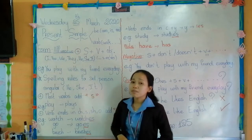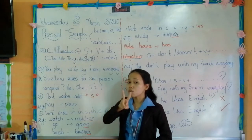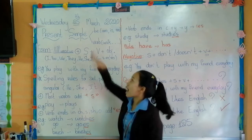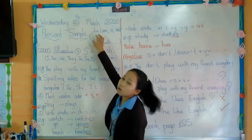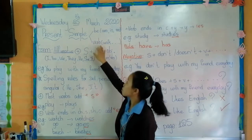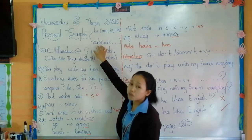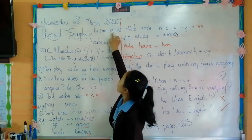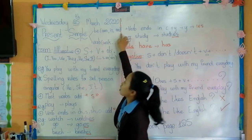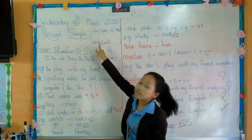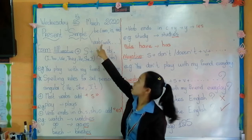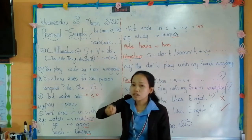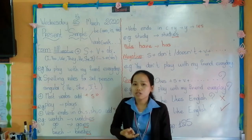So present simple we divide into two. Do you remember about it? We have present simple with verb to be and present simple with verb. With verb to be, we have am, is, and are. Present simple with verb, we have action verb and non-action verb.